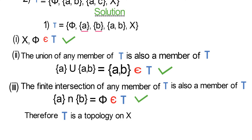At this point, I would like you to pause the video and try finding the union and intersection of other elements in tau to verify if all the conditions are satisfied.